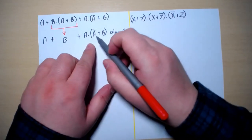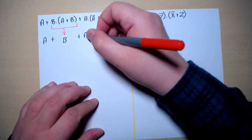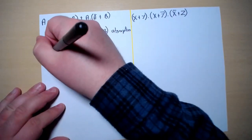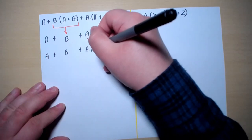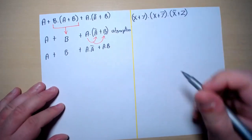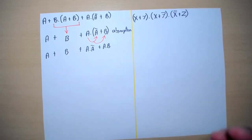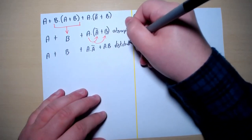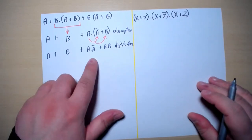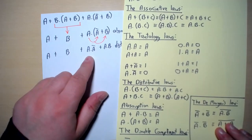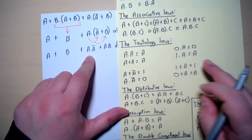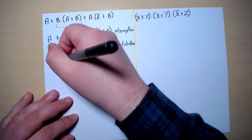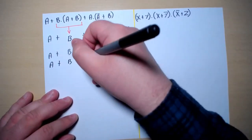Now this one can be expanded: A into A-naught and A into B, giving us A or B or A and A-naught or A and B. When we open brackets we are using the distributive law. Now A and A-naught using the tautology law gives us zero, so we get A or B or zero.